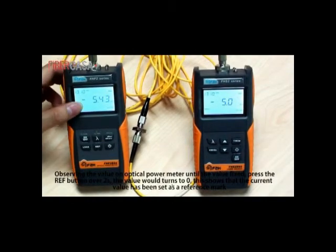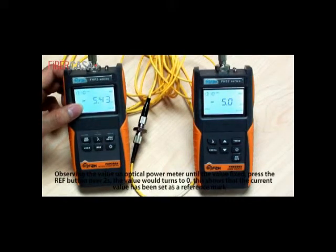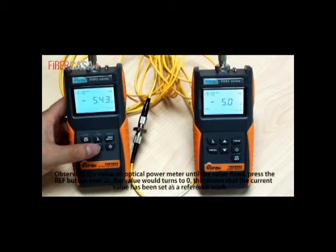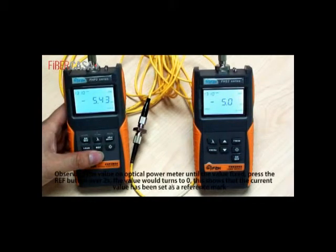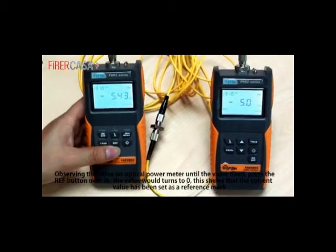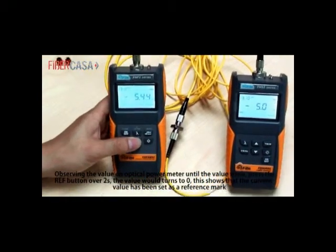Observing the value on optical power meter, until the value is fixed, press the REF button over 2 seconds. The value would turn to 0. This shows that the current value has been set as reference mark.